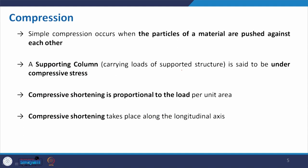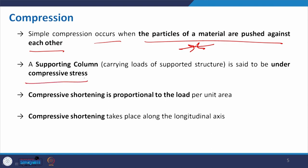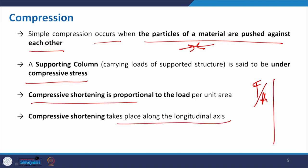Simple compression occurs when particles of material are pushed against each other — they try to come close to each other. A supporting column is one example which is under compression. Compressive shortening is proportional to the load per unit area, so when you have a very small area the stress is even more — stress equals force divided by area, so cross section plays a role. Compressive shortening takes place along the longitudinal axis, most commonly applied through the centre of the member.